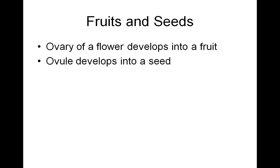Remember: the ovary of a flower develops into the fruit, and the ovule develops into the seed. The fruit aids in seed dispersal, and the seeds protect the embryo until germination when environmental conditions are conducive for growth.